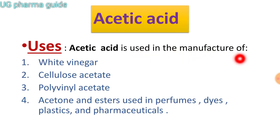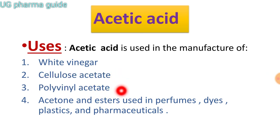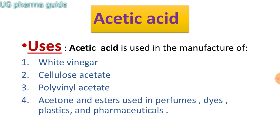Acetic acid को बहुत सारी चीजों के निर्माण में use किया जाता है, जैसे white vinegar, cellulose acetate, polyvinyl acetate — यह दोनों polymers हैं. Acetone and esters, used in perfumes, dyes, plastics and pharmaceuticals. Acetone and esters बनाने के लिए भी acetic acid का use किया जाता है, और इनका काफी importance है pharmacy में.